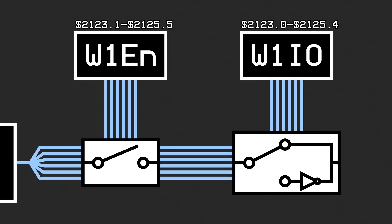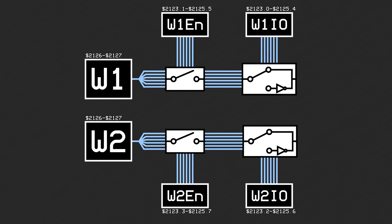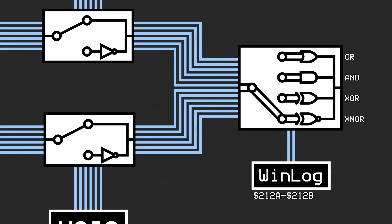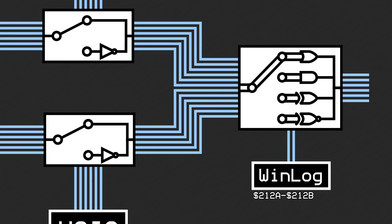The windowing pipeline so far exists for both windows 1 and 2. To wrap up the windowing pipeline, the two windows' data are merged together per layer. The logic used to combine them is either an OR, AND, EXCLUSIVE OR, or EXCLUSIVE NOR, which is determined per layer by the window logic settings in registers 0x212a and 0x212b. The combination logic also handles the case when one window is effectively disabled, allowing the other to pass through unaffected. If both windows are disabled, the pixel is determined to be inside the window by default. At this point, the data per layer represents if this pixel should be treated as being inside or outside the window.